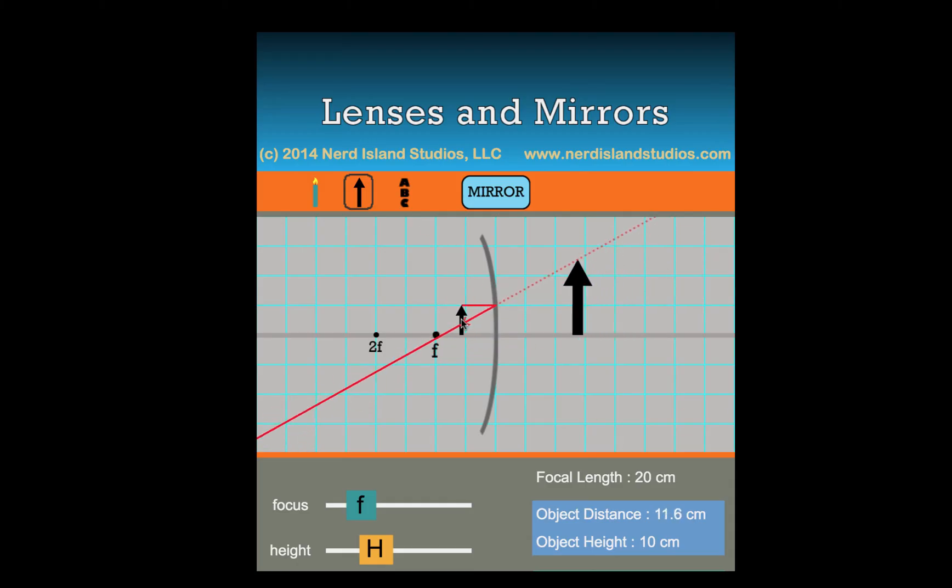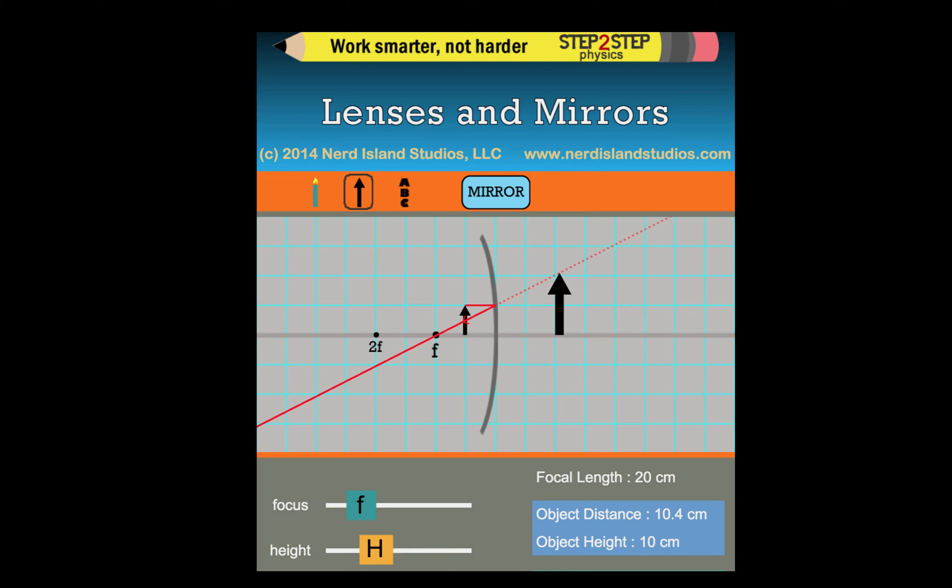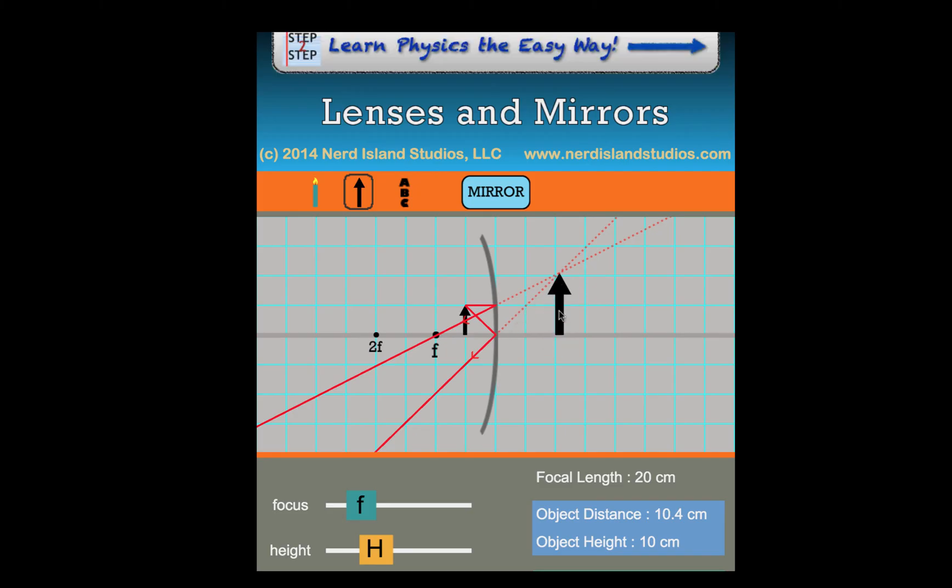And the last one, if I move my object inside the focal point, ray number one, parallel, then through the focal point. If I go to ray three, we have our ray hitting the mirror and reflecting out. This angle right here is identical to this one. Okay, you can see visually they're the same size. I click on ray one and ray two, and where these two rays, if you're to follow them backwards as a dotted line, they intersect back here, which gives us an upright, larger image, and it's located behind the mirror. And because it's behind the mirror, it is a virtual image.